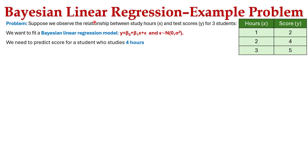Using Bayesian linear regression, let's consider a problem. Suppose we observe a relationship between study hours x and test scores y for three students: if study hours = 1, score = 2; if study hours = 2, score = 4; if study hours = 3, score = 5. We need to fit a Bayesian linear regression model y = β₀ + β₁x + ε, where ε ~ N(0, σ²), and predict the score for a student who studied for 4 hours.